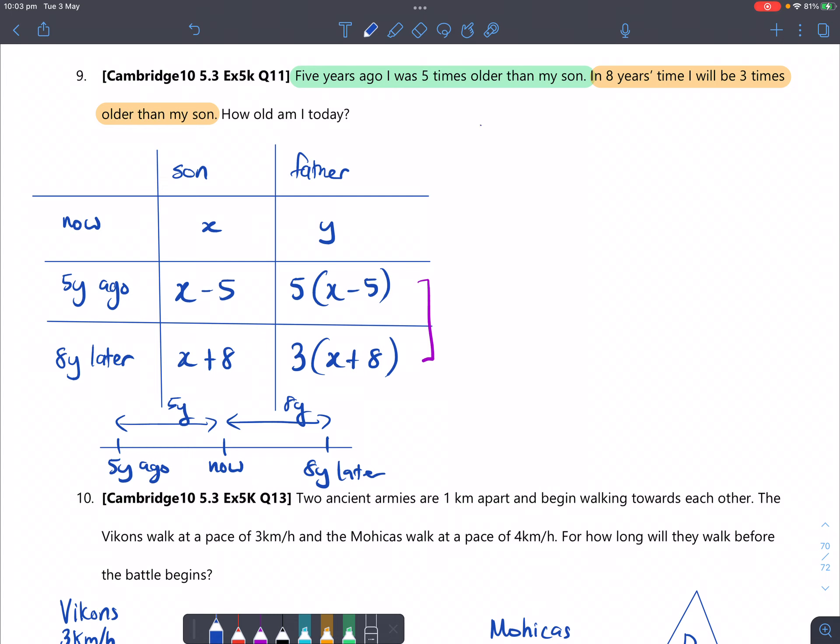So let me just write that. I'll get 3 times x plus 8. Now if I just minus his age five years ago, then the difference in age will be 13. So now I've got an equation that I can solve. I can expand that. So that I'll get 3x plus 24 minus 5x plus 25, that's equal to 13.